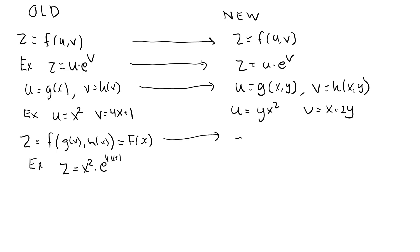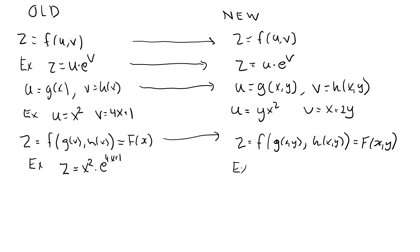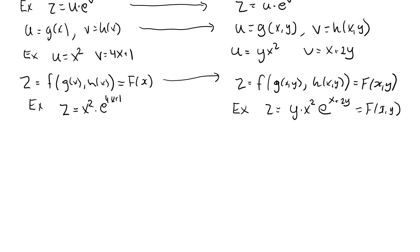In the new scenario, z is a function of u, but now u is a function of both x and y. z is also a function of v, and v is also a function of x and y. So z will depend on both x and y, meaning the composite function must be written as a function of both. In this example, z equals y times x squared times e to the x plus 2y.